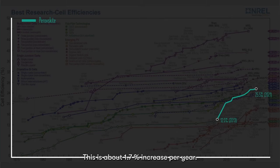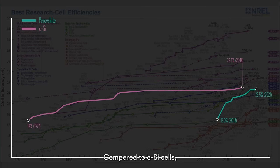This is about 1.7% increase per year. Compared to crystalline silicon cells, it takes about 40 years to increase its efficiency from 14% to 26.1%, about 0.3% increase per year.